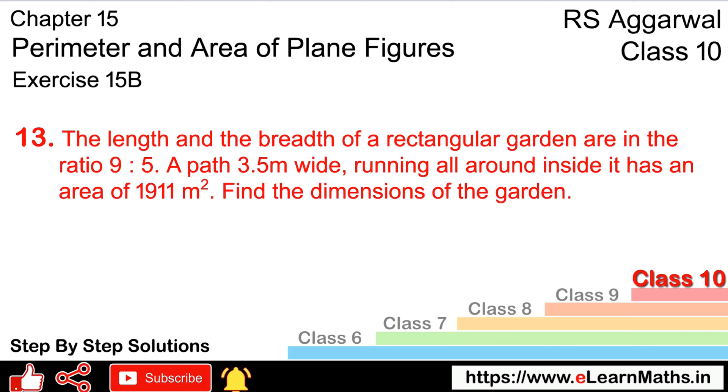Let's do question number 13 of Exercise 15B on perimeter and area of plane figures. The question states: The length and breadth of a rectangular garden are in the ratio 9:5. A path 3.5 meters wide running all around inside it has an area of 1911 square meters. Find the dimensions of the garden.